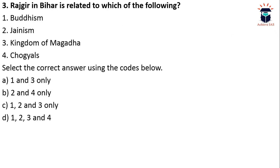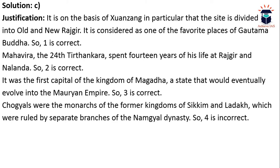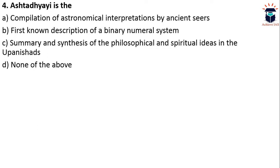Next question: Rajgir in Bihar is related to which of the following — Buddhism, Jainism, the kingdom of Magadha, or Chogyals? The answer is C — one, two, and three. Rajgir was the capital city of Magadha and is one of the favorite places of Gautam Buddha. Mahavira, the 24th Tirthankara, spent 14 years of his life at Rajgir and Nalanda. It was the first capital of the Magadha kingdom, which would evolve into the Maurya Empire. Chogyals were monarchs of former kingdoms of Sikkim and Ladakh, so option four is incorrect.